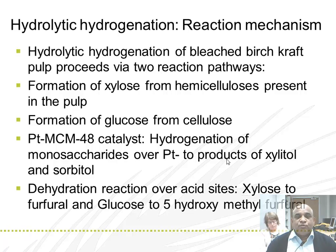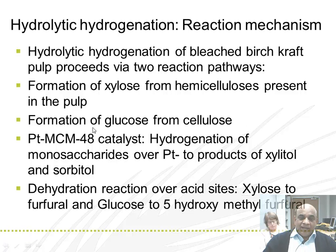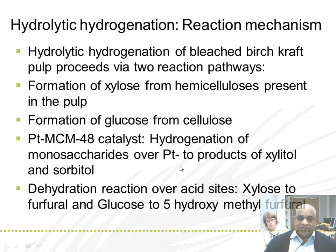the hydrolytic hydrogenation of bleached kraft pulp proceeds via two reaction mechanisms: first, the formation of xylose from hemicellulose present in the pulp, and formation of glucose from cellulose. Platinum-modified MCM-48 gives hydrogenation of monosaccharides over platinum to products of xylitol and sorbitol.